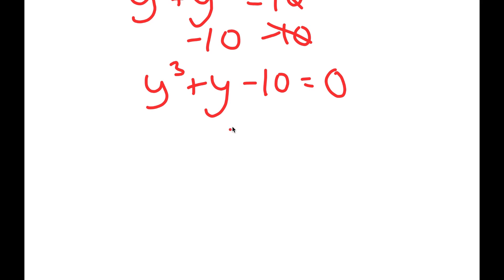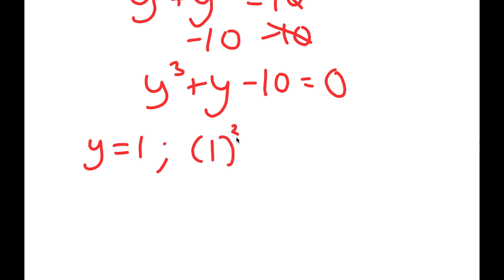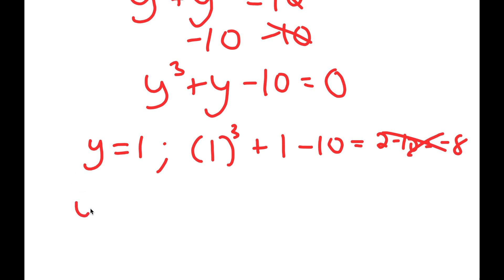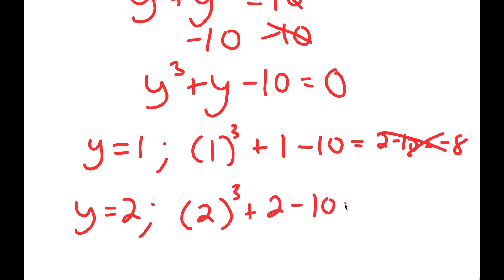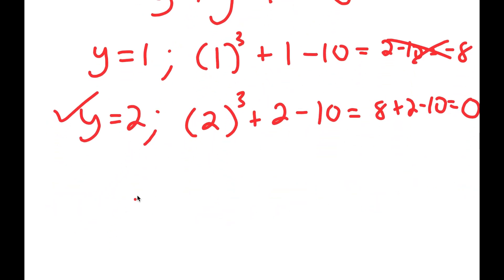To solve this equation, we need to first find one solution and then use that to find the remaining solutions. To find that first solution, we just test values. Starting with y equals 1: I get 1 to the power of 3 plus 1 minus 10, which is 2 minus 10, which is negative 8 — wrong. If y equals 2: I get 2 to the power of 3 plus 2 minus 10. 2 cubed is 8, so 8 plus 2 minus 10 equals 0. This is right, meaning y equals 2 is a solution.